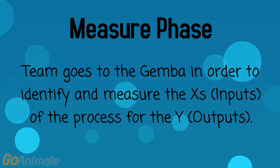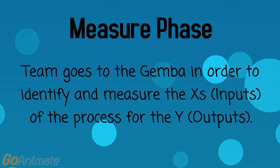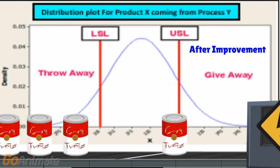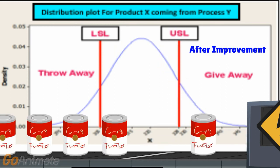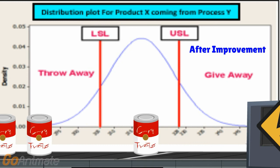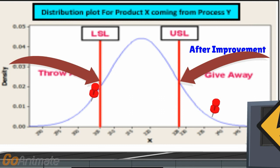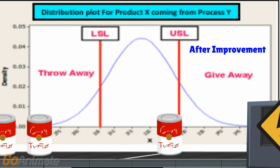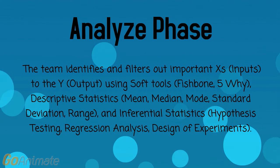In the Measure phase, the team goes to the Gemba in order to identify and measure the X's (inputs) of the process for the Y (outputs). Bob performs process capability and sees that: one, based on the current sample, the process variance exceeds the customer's expectations — the range of the process exceeds the range between the upper and lower specification limits; and two, the process hugs the upper specification limit, meaning the weight of most cans are at or around the maximum acceptable weight.